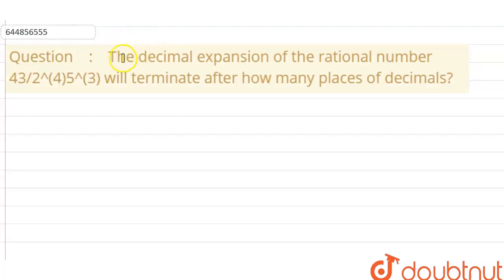In this question we have to find the decimal expansion of the rational number 43 over 2 to the power 4 times 5 to the power 3. It will terminate after how many places of decimals? We have to find how many places of decimal.